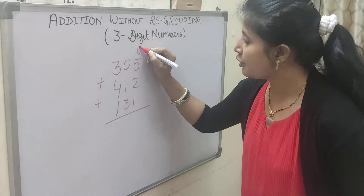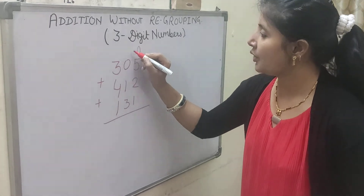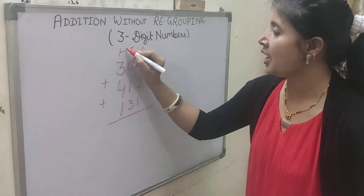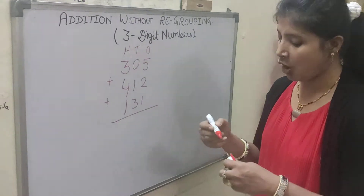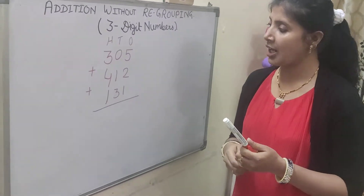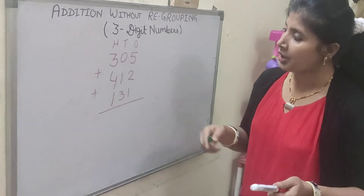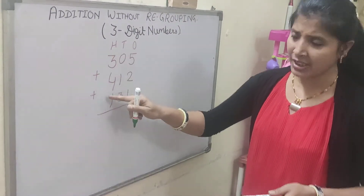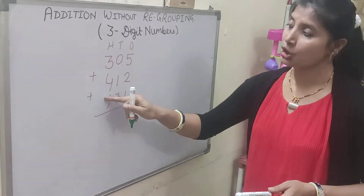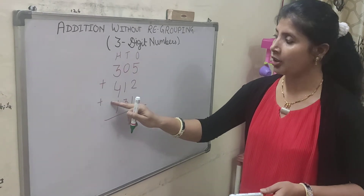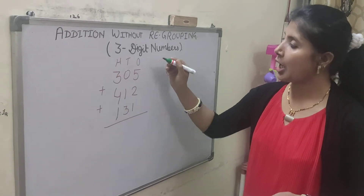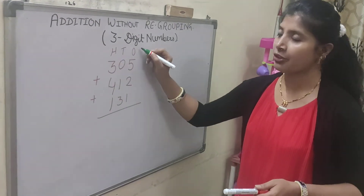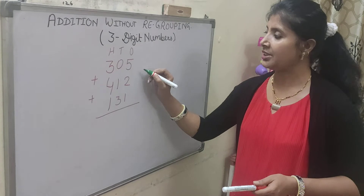Write the place values of these numbers: 1s, 10s, and 100. Now, can we add the numbers starting from the 100s place? No, it will become wrong. So we have to always start from the 1s place digit.